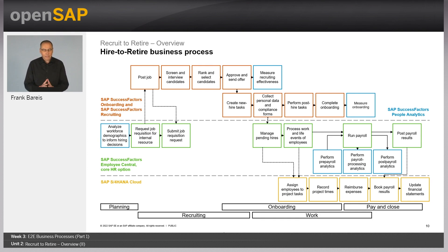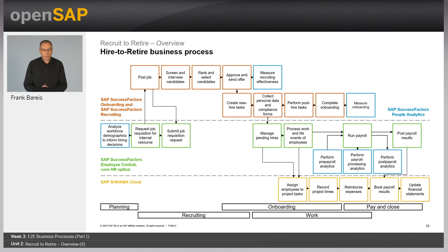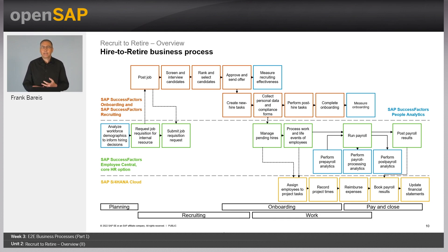From that, we request the job requisition and submit it, and now we start the recruiting part of the hire-to-retire process. This is where the job is posted. We screen and interview the candidates, rank and select them, and finally approve them and send out the offer letter.